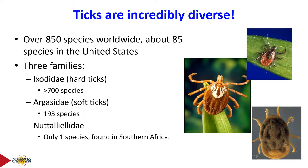The first family is Ixodidae, or hard ticks, distinguished by a hard plate called the scutellum on their back, and mouth parts visible from above. Soft ticks, family Argasidae, don't have that hard plate — they're soft and oval, and their mouth parts cannot be seen from above. There's one more family, a monotypic taxon, with only one species found in southern Africa, not present in the US.